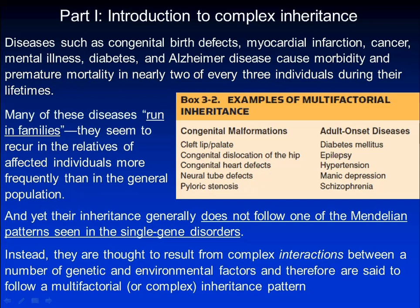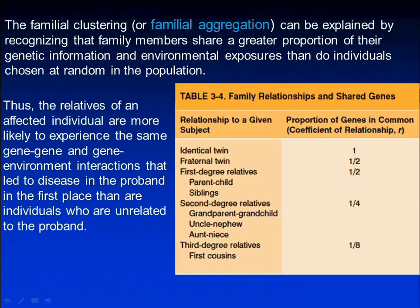Many of these diseases run in families, and yet their inheritance generally does not follow one of the Mendelian patterns seen in single gene disorders. The familial clustering or familial aggregation can be explained by recognizing that family members share a greater proportion of their genetic information and environmental exposures than do individuals chosen at random in the population.